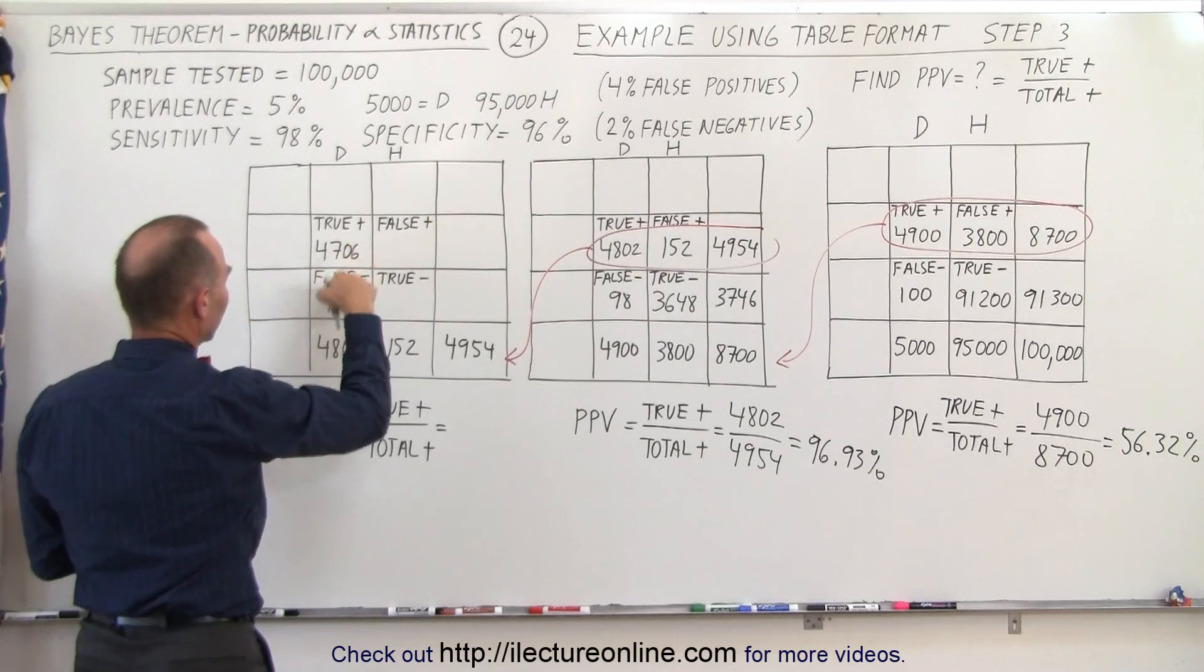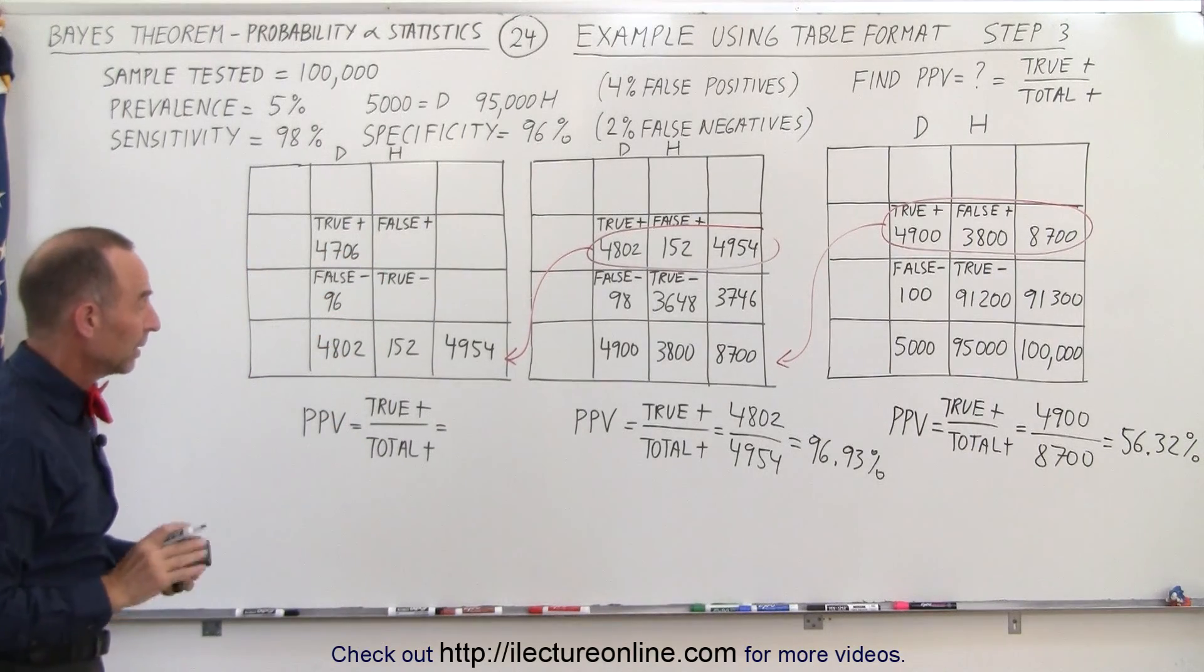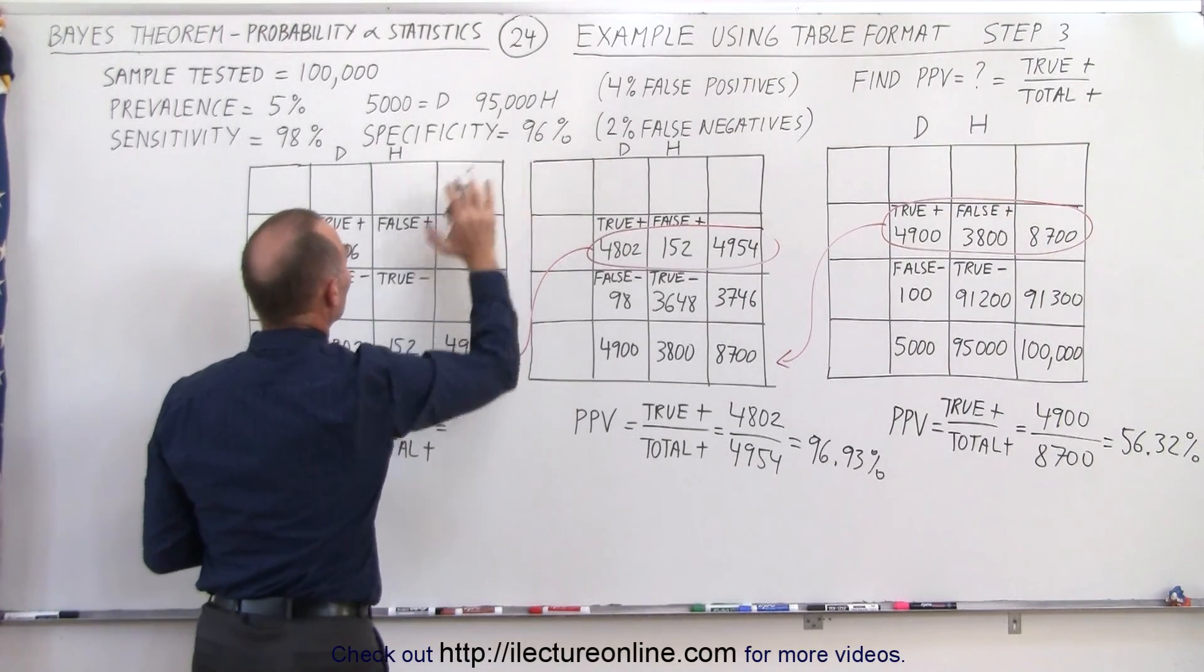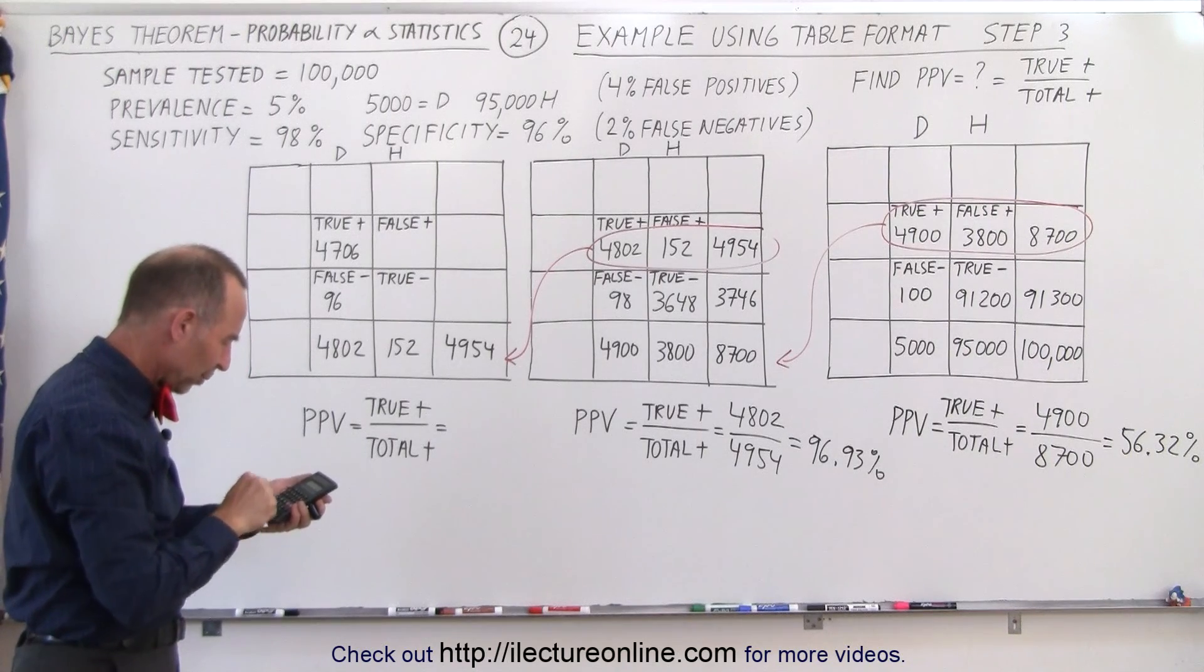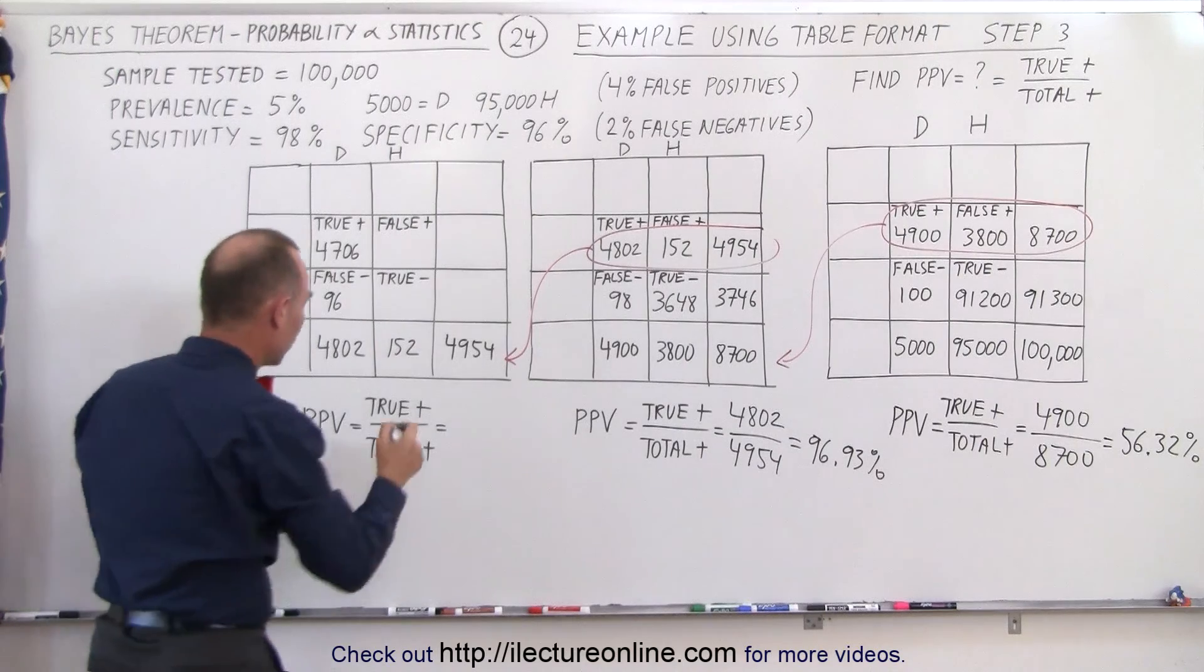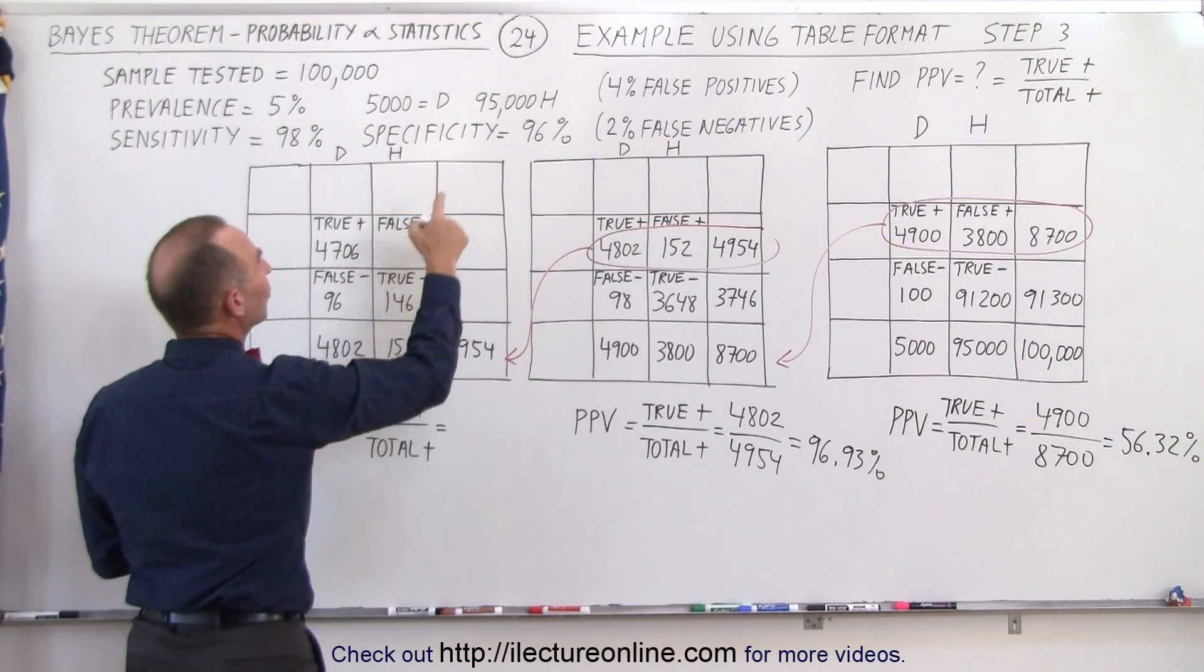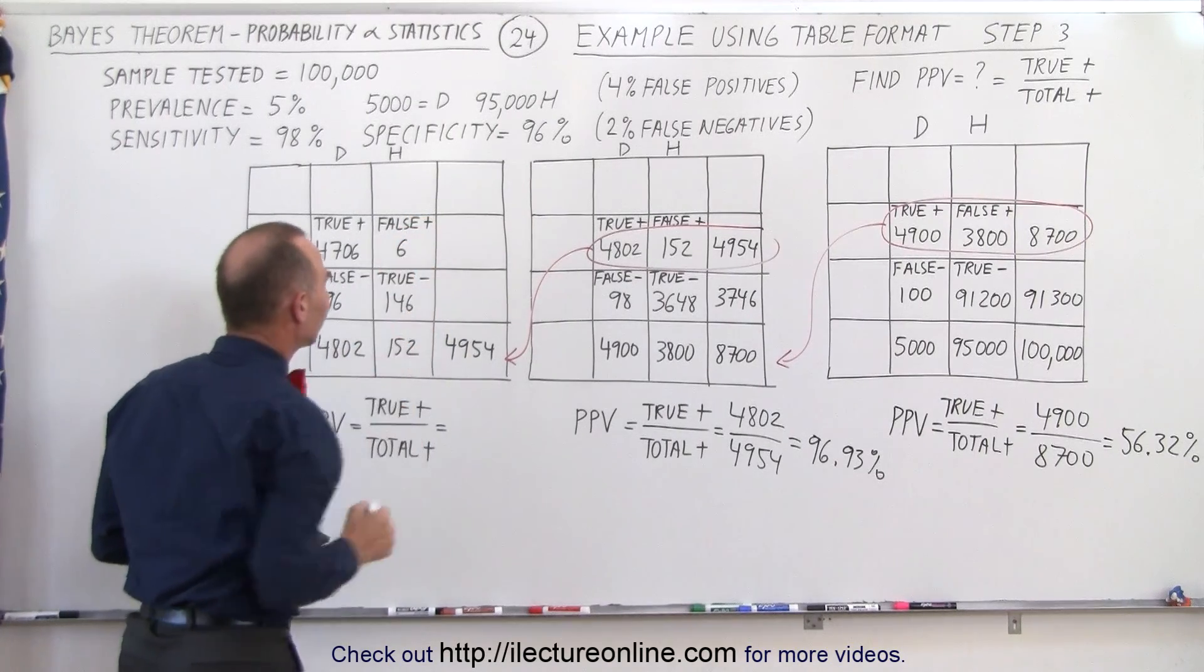4,706 positive. When we add that together we get 4,802. That works. Now of the 152 that are healthy, 96% of them will test true negative. So 152 times 0.96, that would be to the nearest integer 146. 146 will have a true negative, which means 4% will be false positives, which is 6 out of 152.